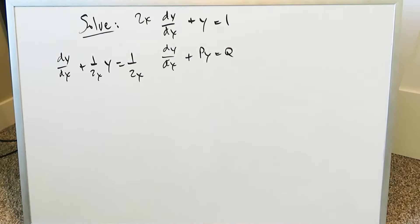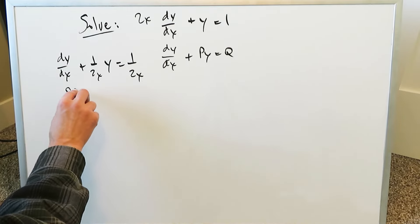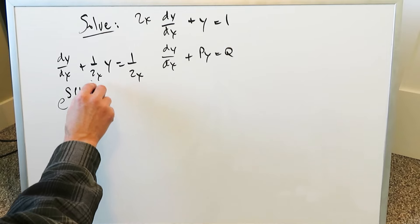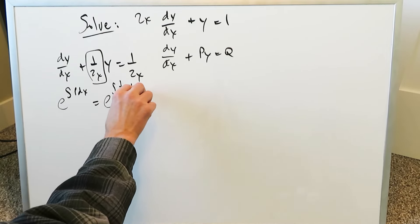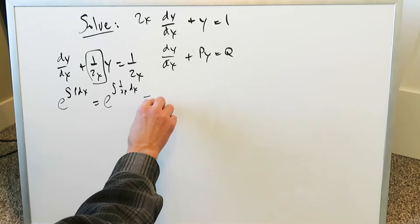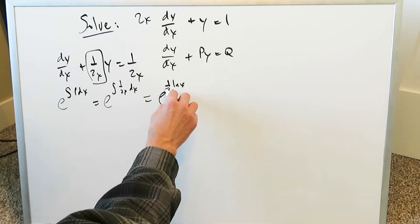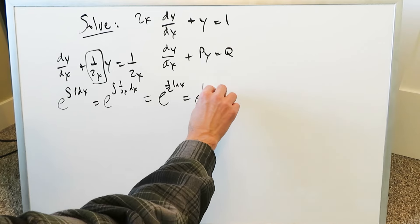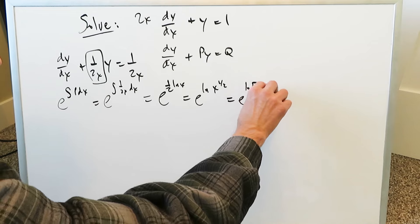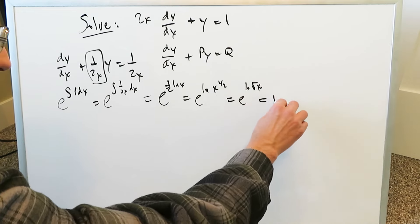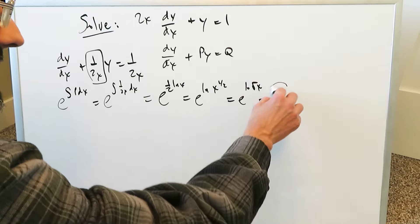From here you can determine the integration factor. You have e to the exponent of the integral of p dx. Your p value is 1 over 2x, so you have e to the integral of 1 over 2x dx. When you work this out you get e to the 1 over 2 times ln x. Using properties of logarithms this becomes e to the ln of x to the 1/2, which is e to the ln of root x.